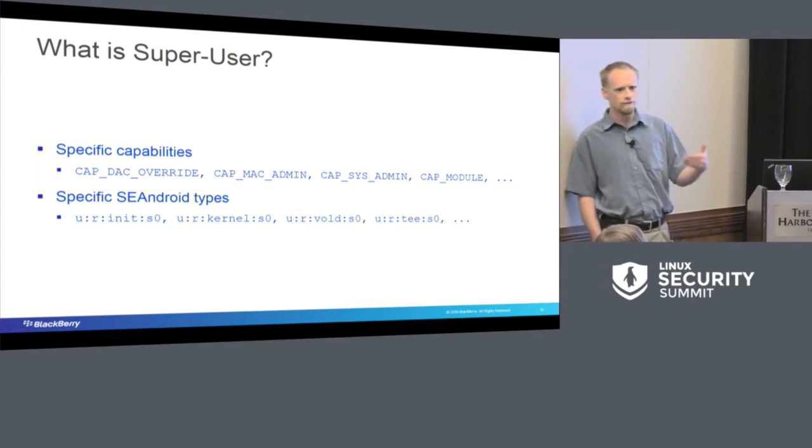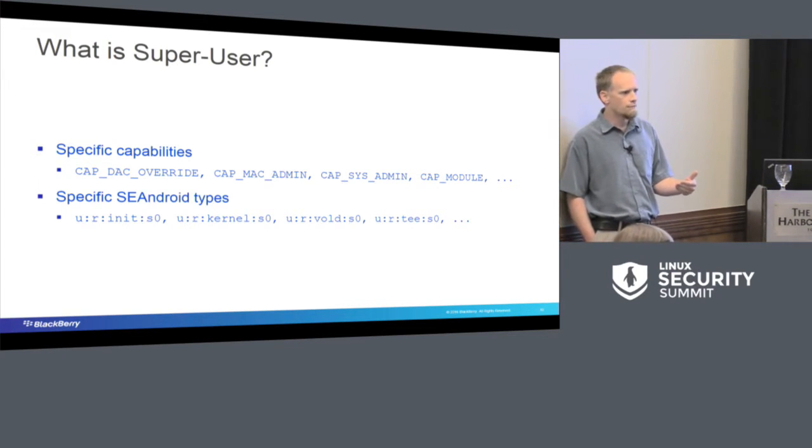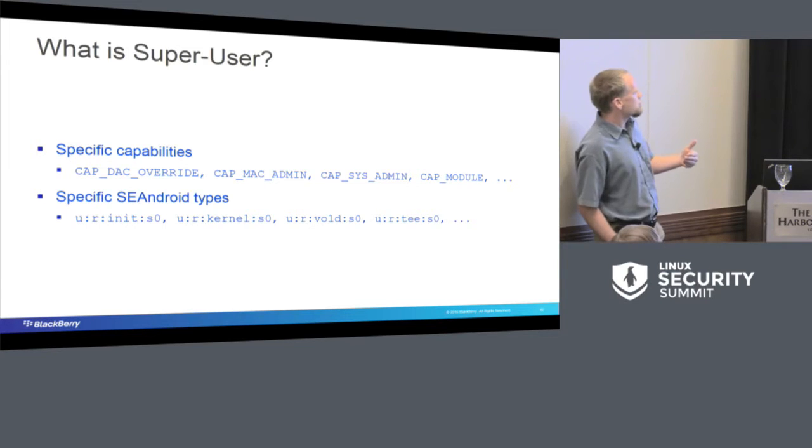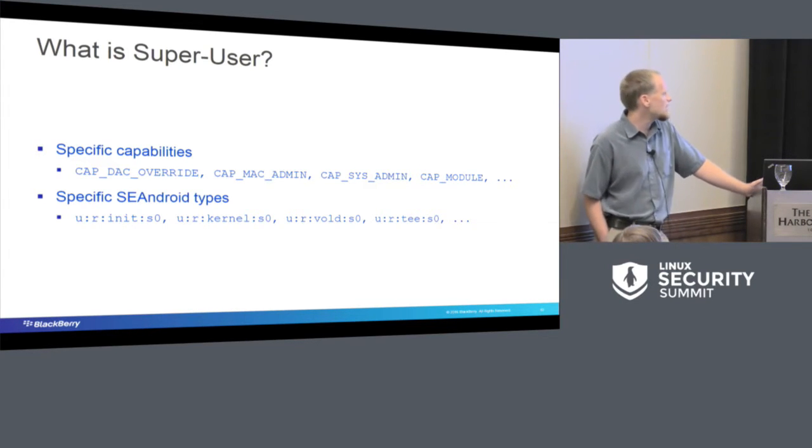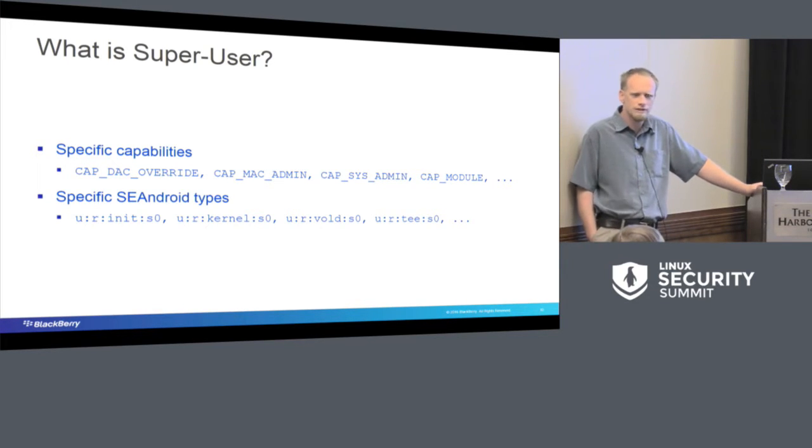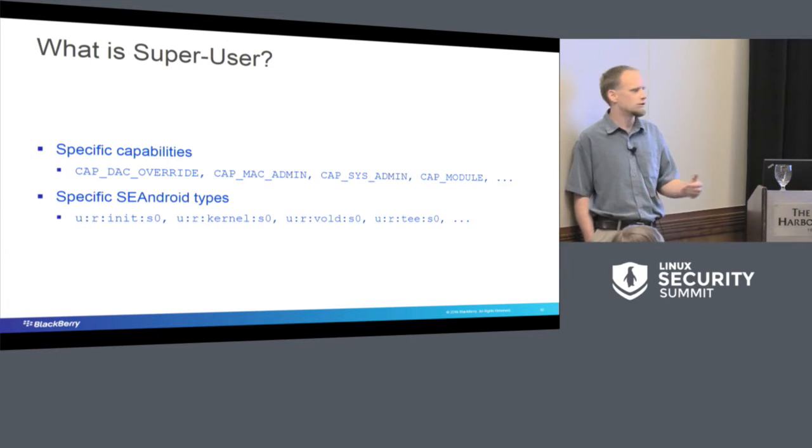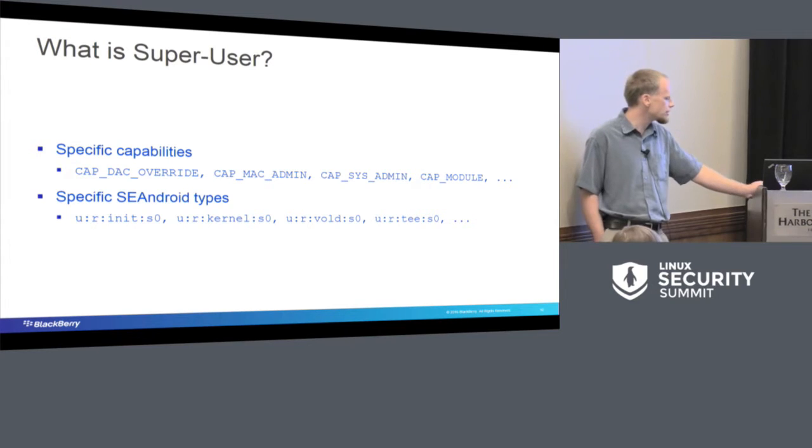QNIX does everything based on paths and they've got a path manager. This was originally done on QNIX, which is why it's called path trust because it relied on the path manager. So what is super user for path trust? Well, super user is someone running with some specific capabilities: DAC override, MAC admin, sysadmin, module, these sorts of Linux capabilities. Or it's someone trying to run with specific SE Android types. Things like init probably shouldn't come off of user data. They should be on the system partition.